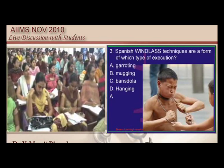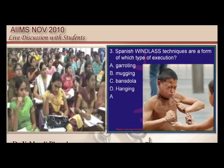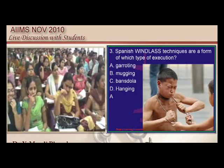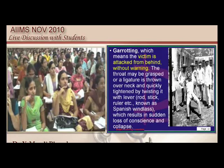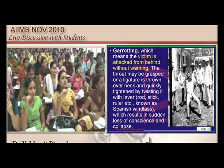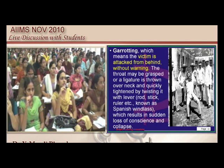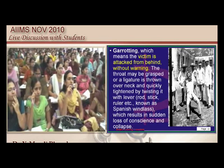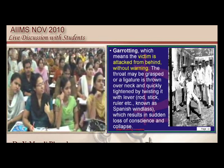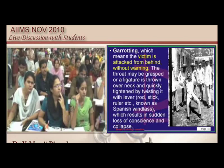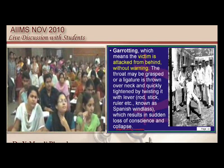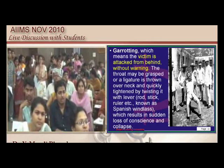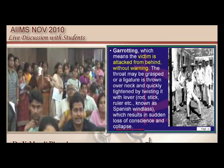What is meant by the Spanish windlass technique of execution? Typically, from behind the patient, the victim is attacked without any warning by application of a strangulating rope or device — this is basically called the windlass technique, which is an example of garroting.